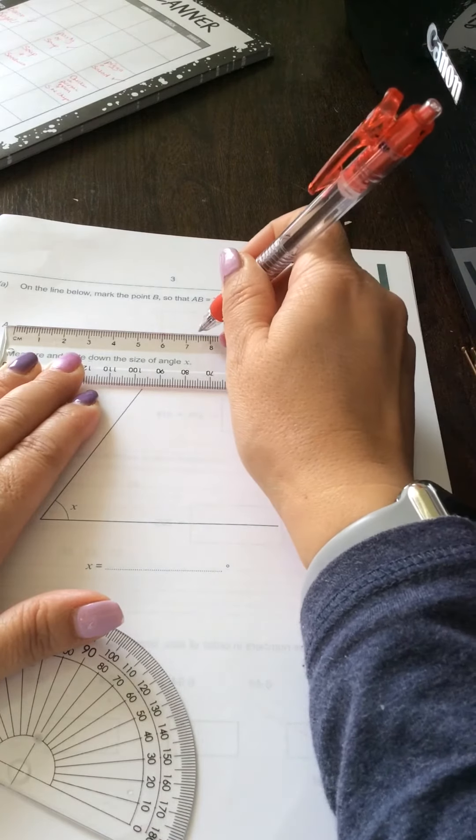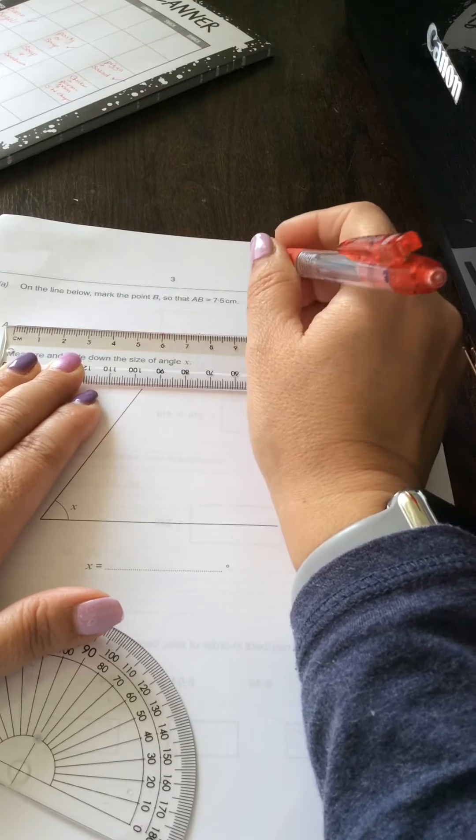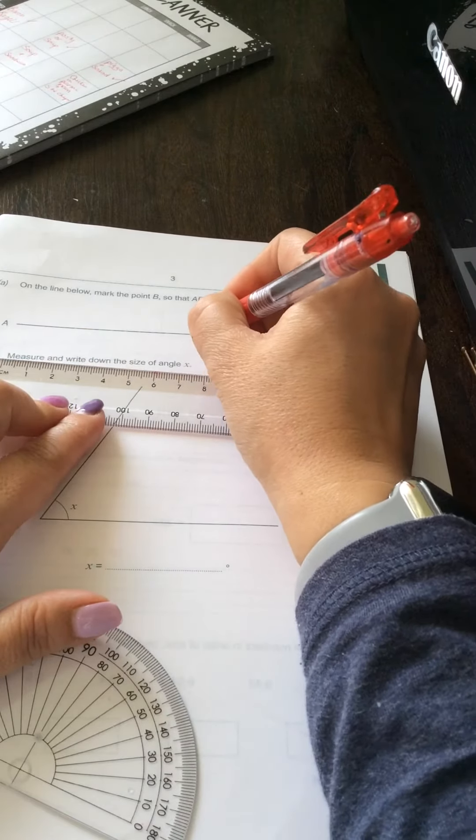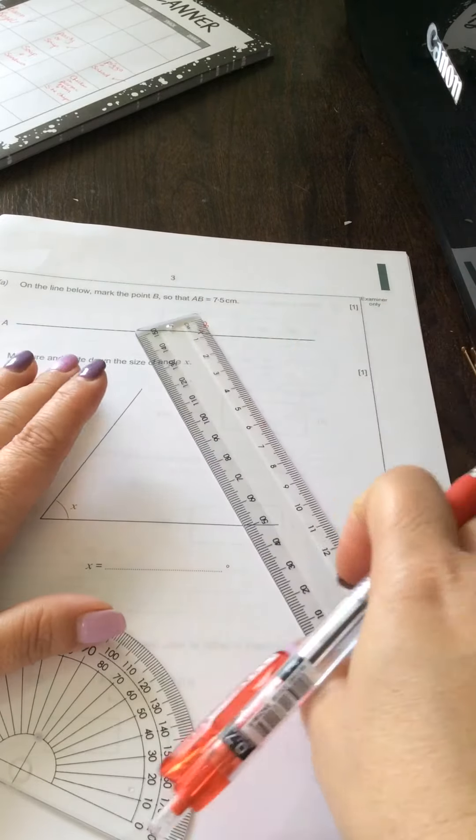Go to 7.5, which is exactly halfway between 7 and 8. Mark it there and label it B. That would get you the one mark.